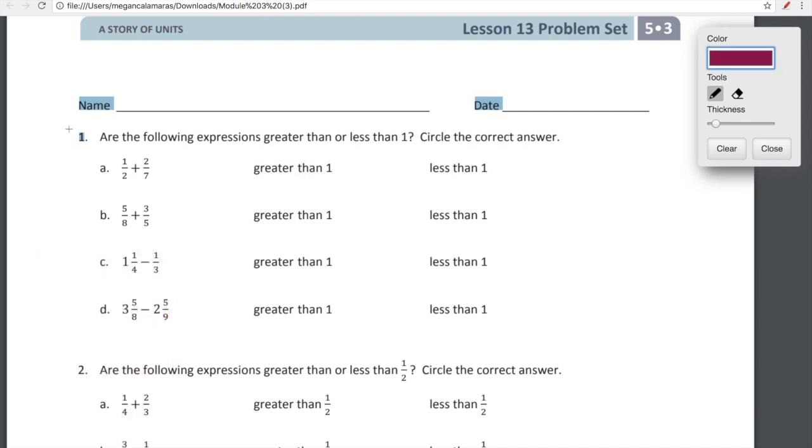Okay guys, let's get into this. We are going to start in our problem set for number one. We're looking at: are the following expressions greater than or less than one? Circle the answer. We're talking about our learning target in lesson 13. We're using those benchmark numbers. The benchmark numbers that we want to keep in mind are zero, one half, and one whole. So here's how we're going to use those benchmark numbers. One half, already a benchmark number, so we're not going to change that. We're thinking about the sum: is it greater than one or less than one?